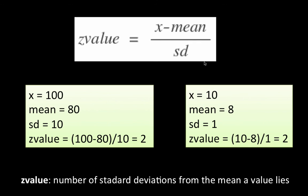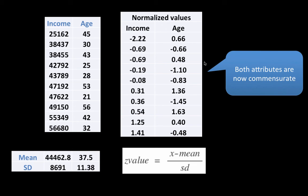So let us see how it looks when we apply it to our income and age data. So we have got incomes and ages. Incomes ranging from 25 to 25.